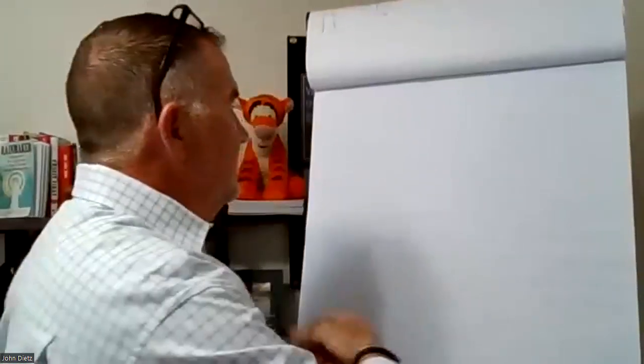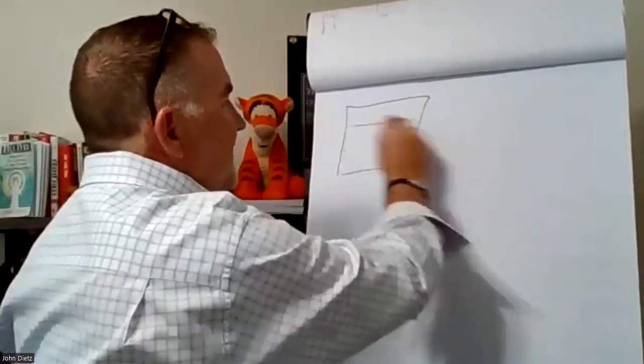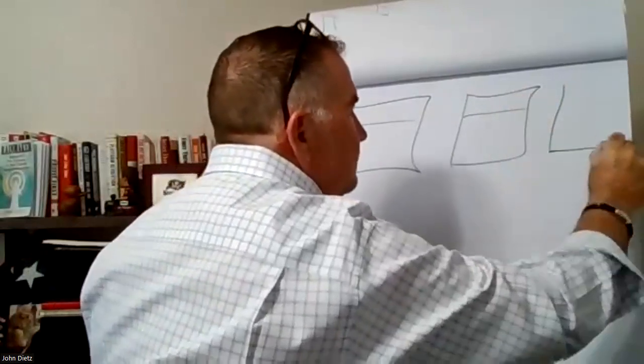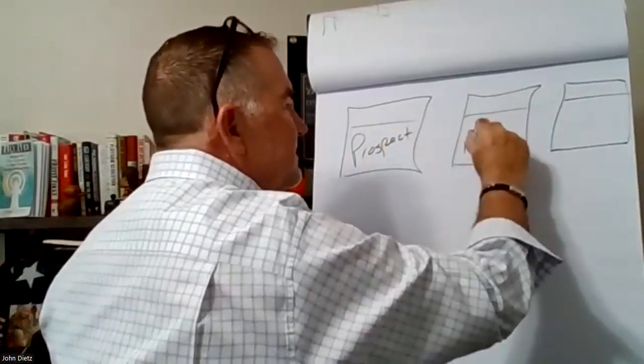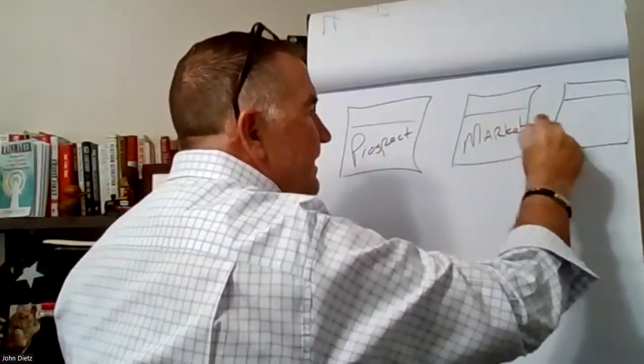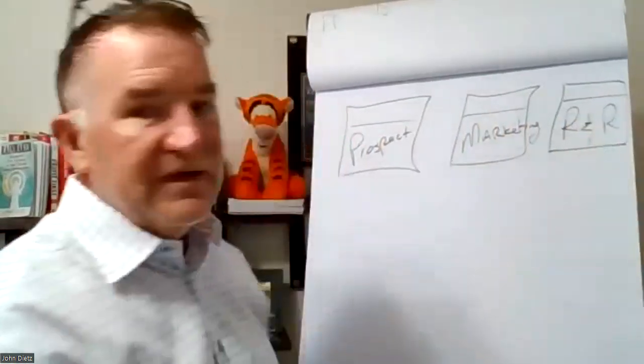Today is lead generation and lead conversion. You have three buckets to work from. Prospecting, marketing, and repeat and referral business. So if you draw a picture on a piece of paper and just put three buckets at the top of the paper, you've got your prospecting bucket, you've got marketing, and you have repeat and referral business.